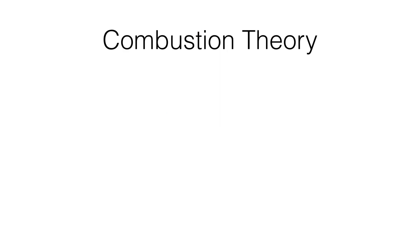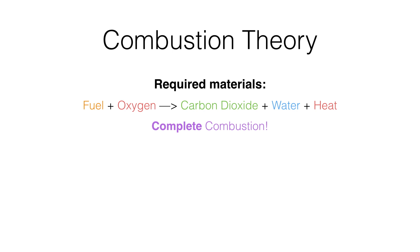Let's begin with combustion theory. To combust, you need a few things. Here are the required materials: fuel, oxygen, and initial heat, usually from a candle flame or match. This produces carbon dioxide gas, water vapour, and heat energy. This is known as complete combustion. That is, all the fuel combines with just the right amount of oxygen to completely burn, producing a very clean flame.